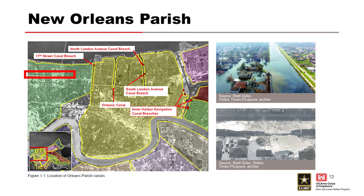We can't really talk about slope instability without talking about Hurricane Katrina and some of the breaches we saw in the New Orleans parish as a result of the hurricane loading. Specifically, we'll talk about the 17th Street Canal breach, which was attributed to embankment or I-wall instability.